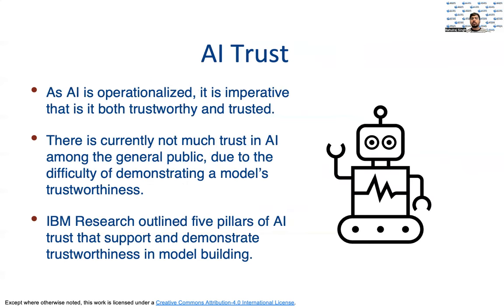Now let's understand what all of this means in terms of artificial intelligence. As AI becomes more embedded in daily business operations and begins to make more crucial decisions, it has become imperative that it is both trustworthy and trusted. Unfortunately, AI is mysterious even to its own engineers sometimes, so it is difficult to demonstrate its trustworthiness. Even though the power of AI and machine learning is incalculable and the good it can do is so great, the general public does not currently trust AI. In response to this, IBM Research has outlined five pillars which can be used to strengthen tools for AI.